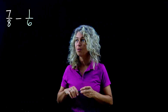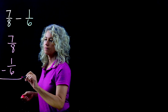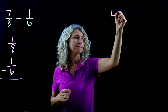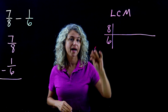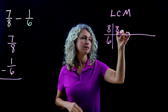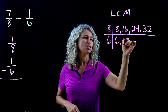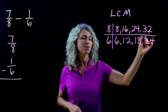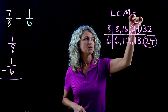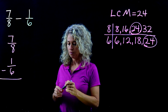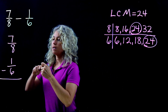Now let's look at a subtraction example. Rewrite the problem vertically: 7/8 minus 1/6. Find the LCM — the denominators are 8 and 6. Listing out multiples: 8, 16, 24, 32... and 6, 12, 18, 24. We can stop there because we see 24 is in common for both, so 24 is our LCM and our new denominator.